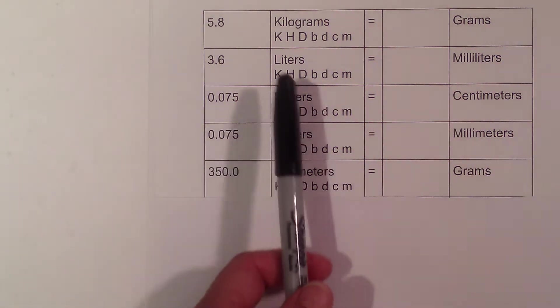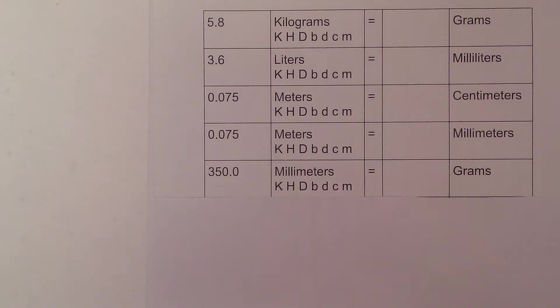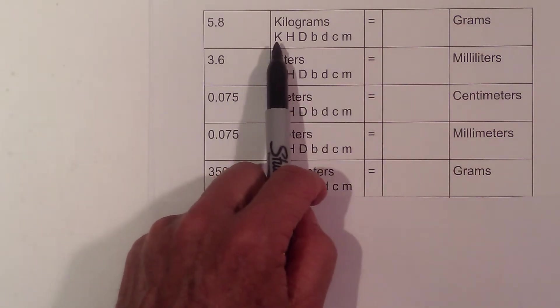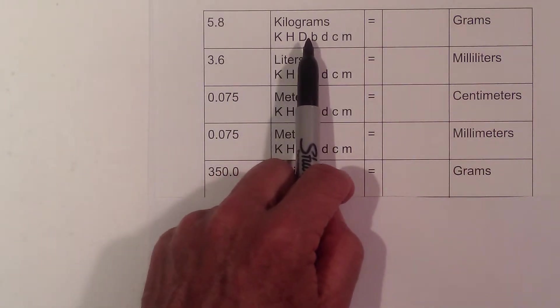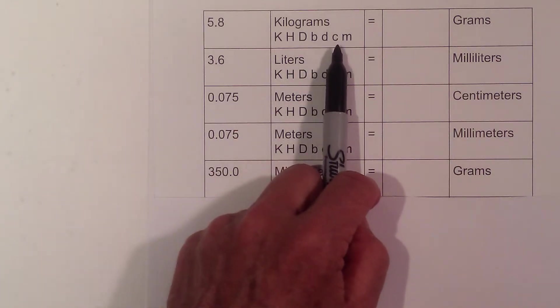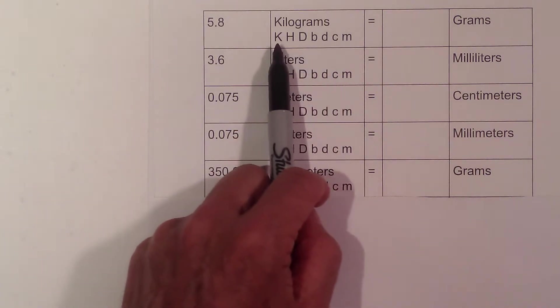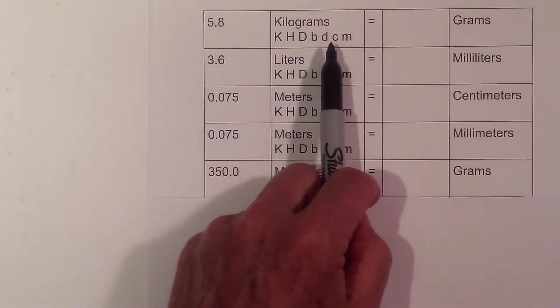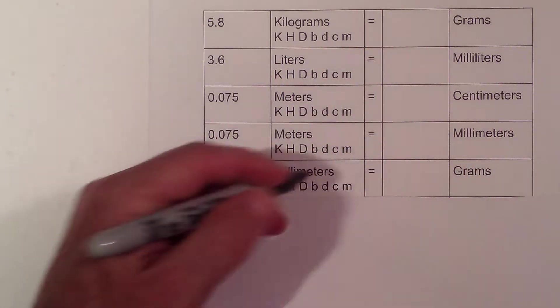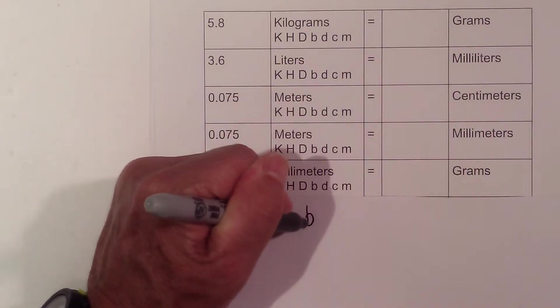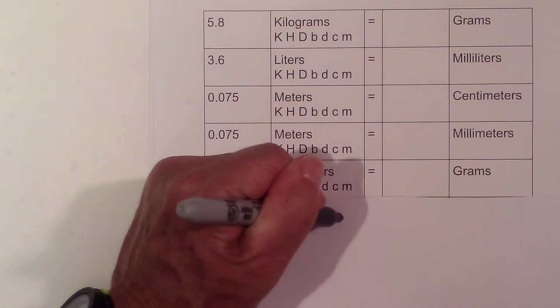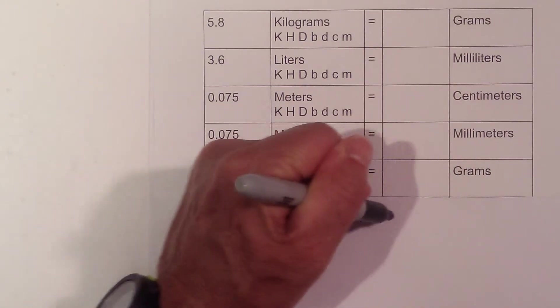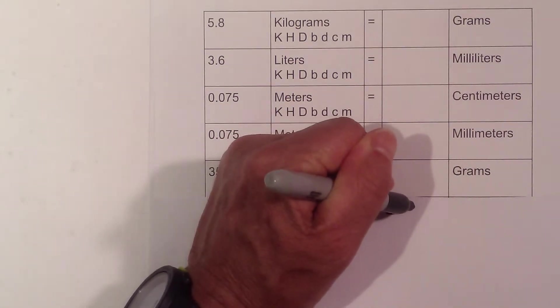In this video, let's practice converting within the metric system. We have King Henry Died By Drinking Chocolate Milk: Kilo, Hecto, Deca, Base unit, Deci, Centi, Milli. The base units—I'll write base—in this particular example will be meters, liters, and grams.